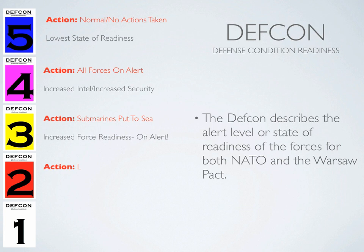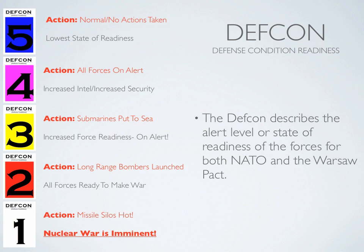In the Cold War simulation, DEFCON, or Defense Condition Readiness, describes the alert level for both NATO and the Warsaw Pact. DEFCON 5 is the lowest level of readiness and is considered normal. DEFCON 4 is when security and intelligence work is increased and all forces are on alert. DEFCON 3: nuclear submarines put to sea. DEFCON 2: all bombers are launched and in the air. DEFCON 1: all missile silos are hot and ready for launch — the highest alert status before nuclear weapons are deployed.